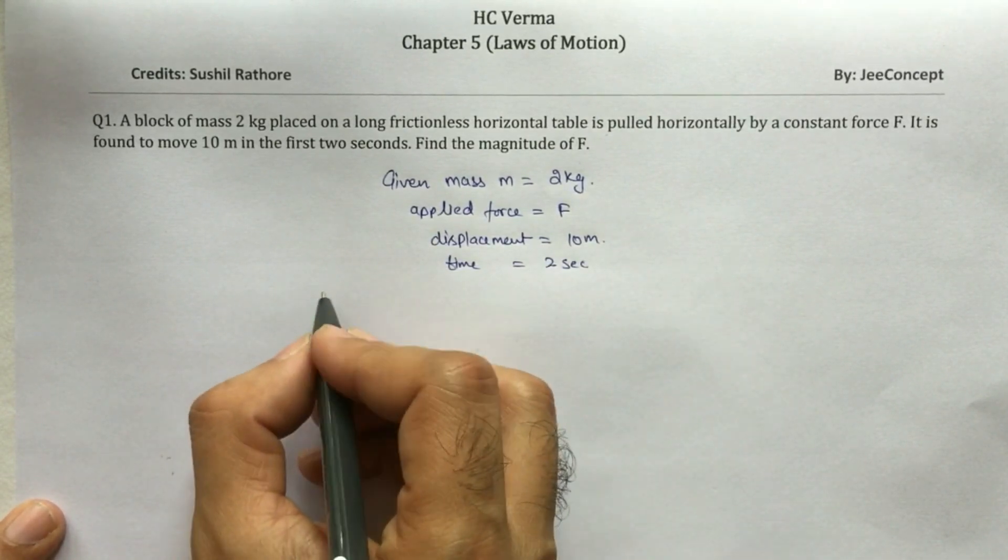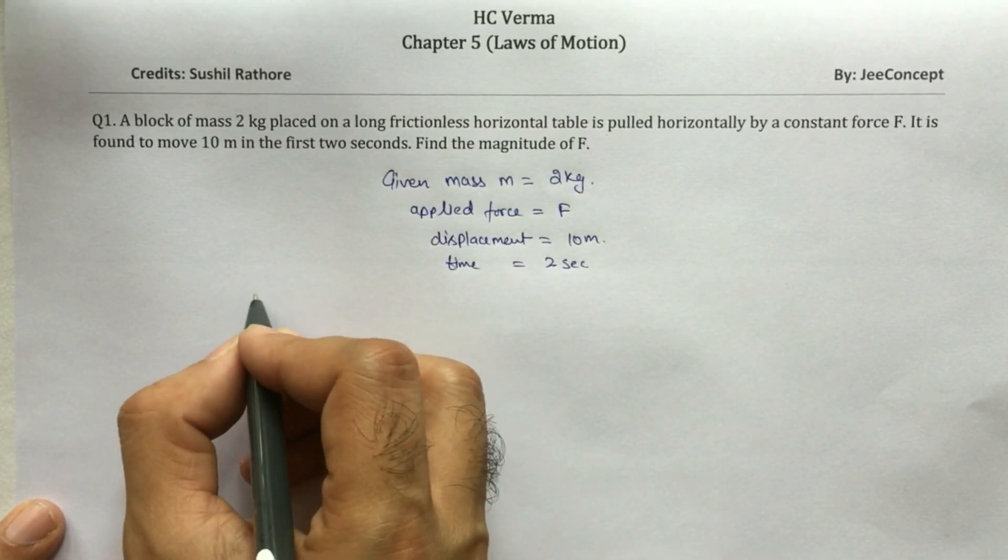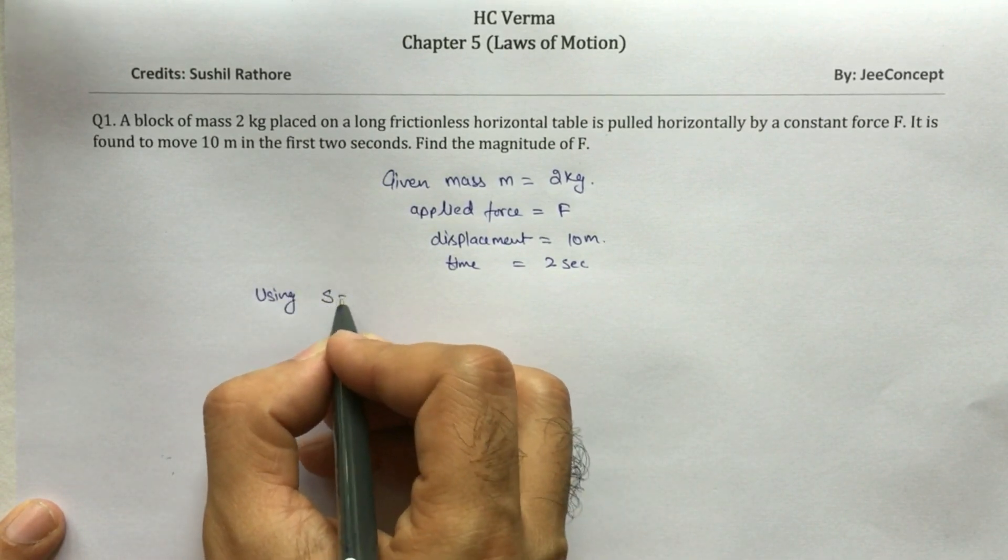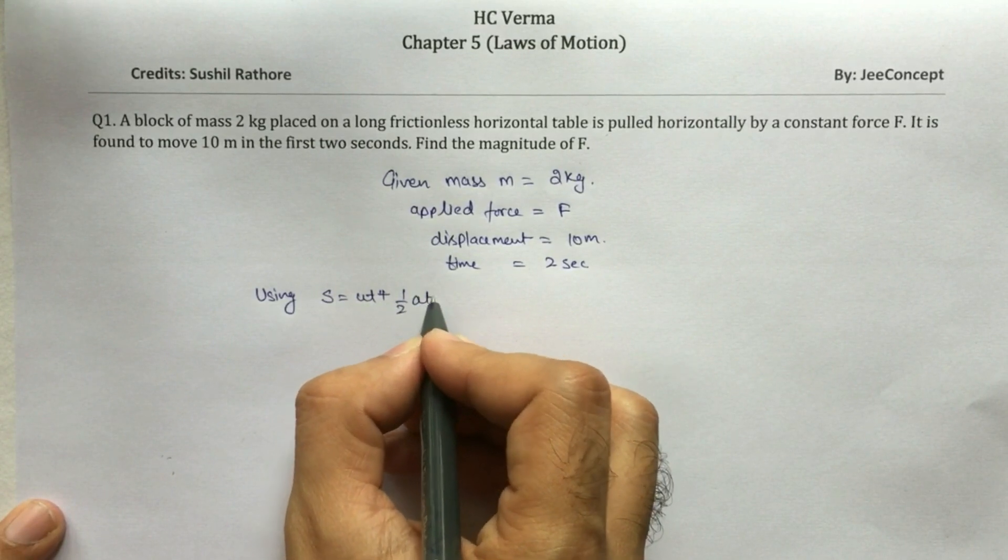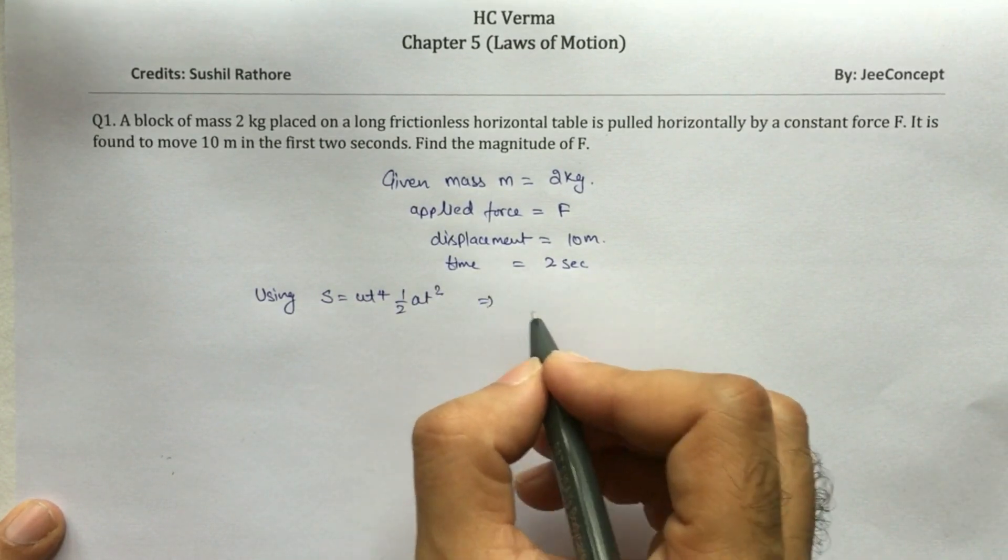So now I can use the equation of motion. Using S equals UT plus half of AT squared, we can calculate.